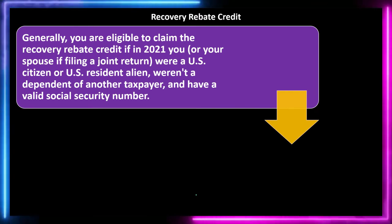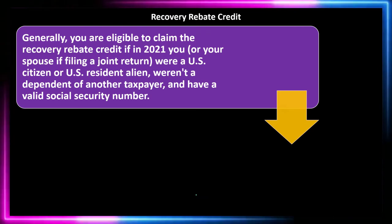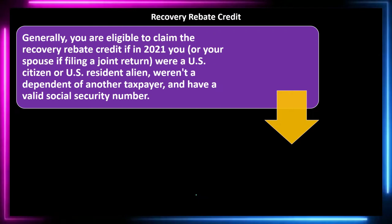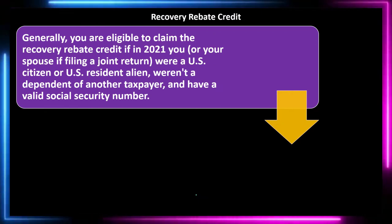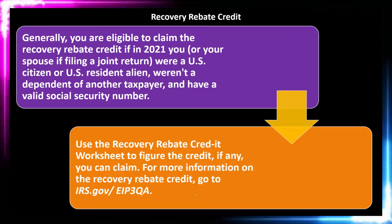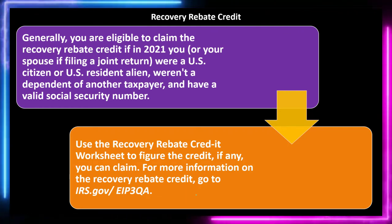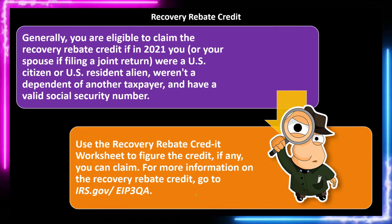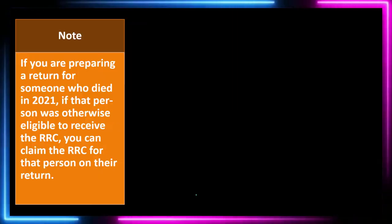Generally, you are eligible to claim the recovery rebate credit if in 2021 you — or your spouse if filing a joint return — were a U.S. citizen or U.S. resident alien, weren't a dependent of another taxpayer, and have a valid social security number. Use the recovery rebate credit worksheet to figure the credit you can claim. For more information on the recovery rebate credit, go to irs.gov/EIP3QA.